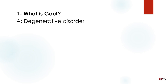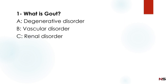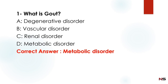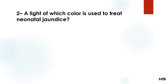What is gout? Option A: degenerative disorder. Option B: vascular disorder. Option C: renal disorder. Option D: metabolic disorder. The correct answer is metabolic disorder — gout is a metabolic disorder. Option D is the answer.